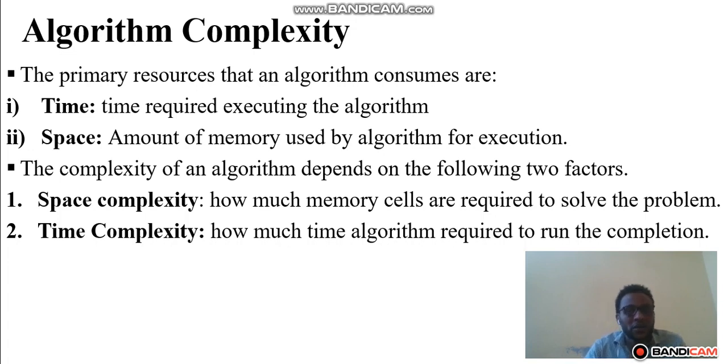Algorithms consume many resources. So the primary resources that an algorithm consumes are time and space. Time is the time required to execute an algorithm. Space is the amount of memory used by an algorithm for execution.